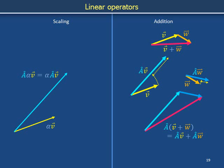An operator that satisfies both the scaling property and the addition property satisfies the equation: a-hat on quantity (alpha*v + beta*w) equals alpha*a-hat*v plus beta*a-hat*w. Please verify this equation using the scaling and addition properties. If operator a satisfies this equation for every pair of vectors v and w in a vector space of interest, we say that the operator is a linear operator.